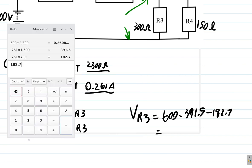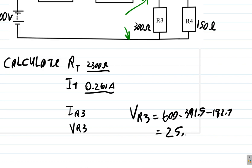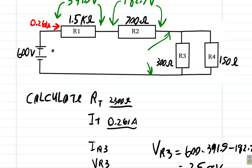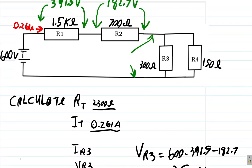We have 600 volts minus 391.5 volts, minus 182.7 volts equals, we will have 25.8 volts remaining. 25.8 volts will be the voltage drop across R3. We have 25.8 volts here.